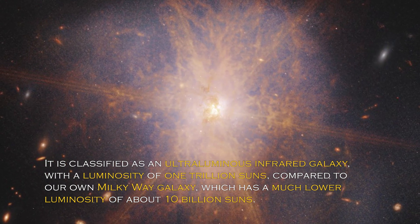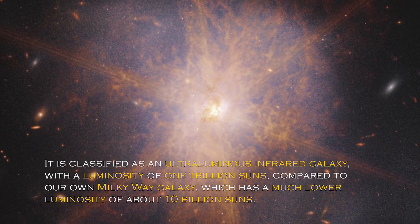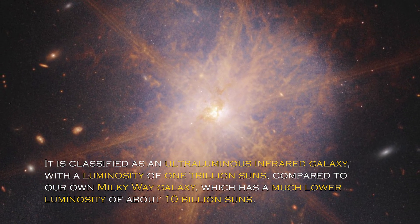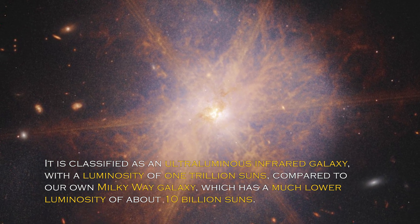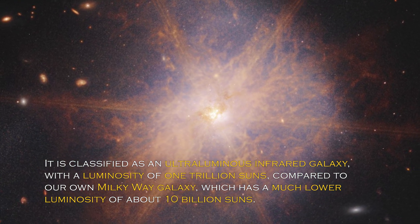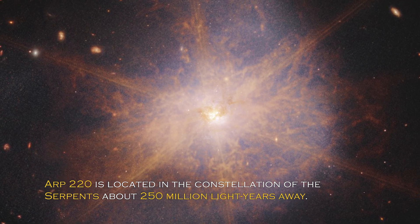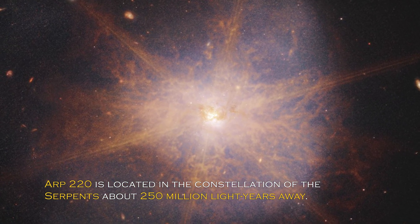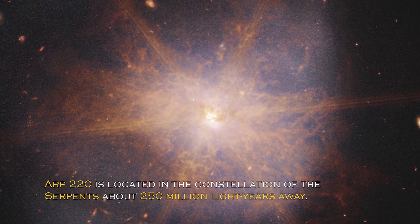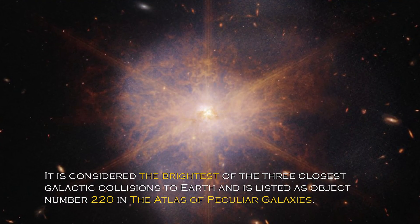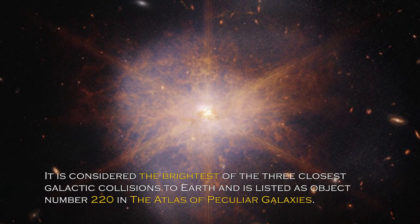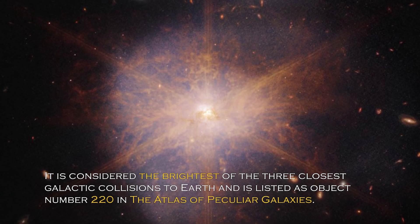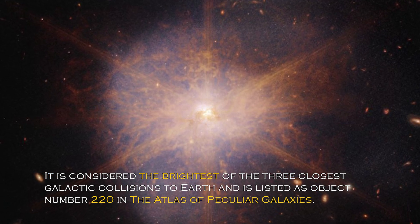It is classified as an ultra-luminous infrared galaxy, with a luminosity of one trillion suns compared to our own Milky Way, which has much lower luminosity of about 10 billion suns. ARP 220 is located in the constellation Serpens, about 250 million light-years away. It is the brightest of the three closest galactic collisions to Earth.